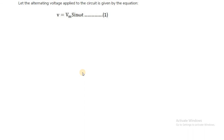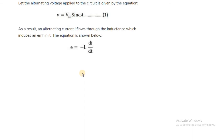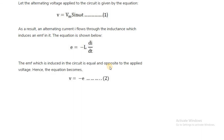The voltage induced in that particular inductor is called the induced EMF. As per electromagnetic induction, E is equal to minus L di by dt, which is called the self-induced EMF. This induced EMF acts in the opposite direction to the applied voltage V, as per Lenz's law. So V is equal to minus E.